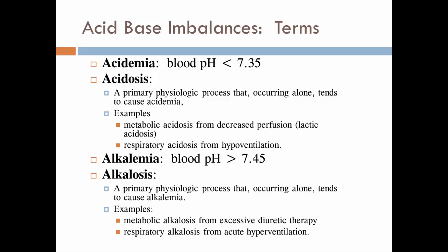Alkalemia is when blood pH is greater than 7.45, and alkalosis would be the primary physiological process that, occurring alone, tends to cause alkalemia. Again, don't get wrapped up about the details between those two, just that they both refer to blood pH as higher than 7.45. We have two types of alkalosis: metabolic alkalosis, which can happen from excessive diuretic therapy, or respiratory alkalosis, which can happen when you're hyperventilating.